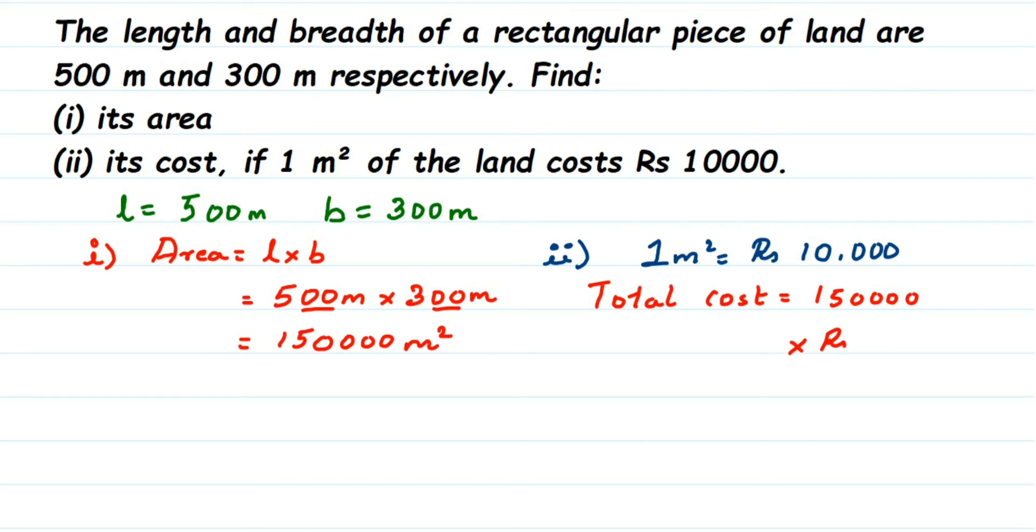...multiplied by rupees 10,000. If it was two meters it will be 10,000 plus 10,000 which will be 20,000. If it was three meters it will be 10,000 plus 10,000 plus 10,000 which is 30,000, or you can simply do 3 into 10,000 which will be 30,000. Instead of adding, it will be multiplying. Here we cannot add it one lakh 50,000 times, right? So it's better to multiply. If you multiply, 15 into 1 is 15, and then you have four zeros here and four zeros here, so total eight zeros you will get. It is a huge number. That's it.